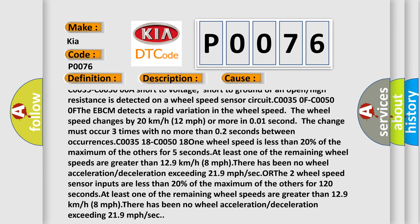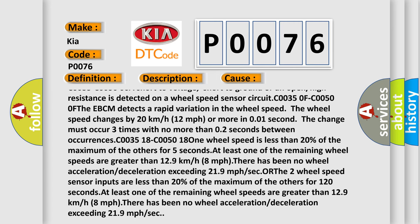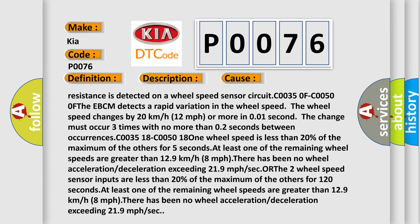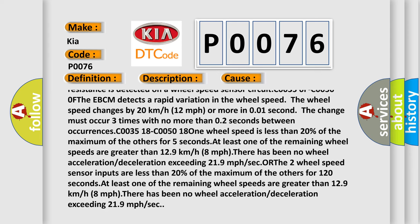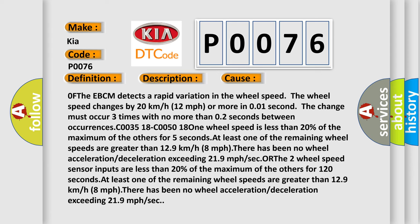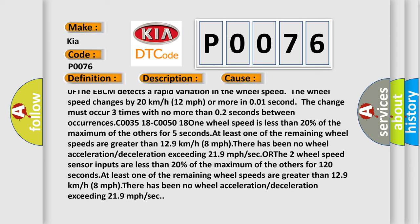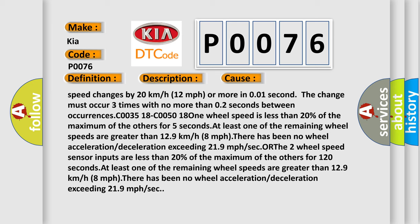At C0035 0F-C0050 0F, the EBCM detects a rapid variation in the wheel speed. The wheel speed changes by 20 kilometers per hour (12 miles per hour) or more in 0.01 second. The change must occur three times with no more than 0.2 seconds between occurrences.